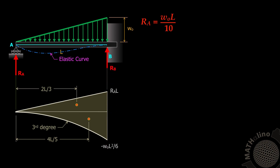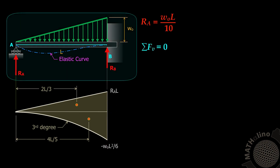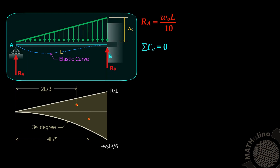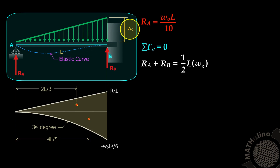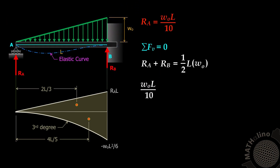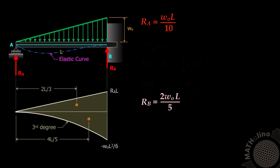To solve for RB, we sum all forces in the vertical direction from the load diagram. Upward forces: RA plus RB equals downward forces, which is one-half times base L times altitude W-naught. Substituting RA equals W-naught L over 10, RB equals W-naught L over 2 minus W-naught L over 10, giving RB equals 2 W-naught times L over 5.